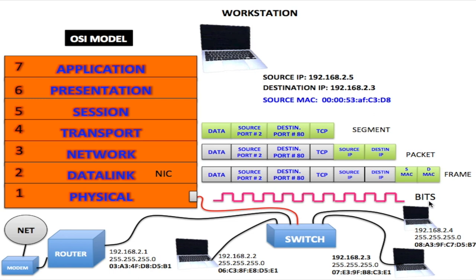Now this is a local area network connected to a switch. We have four computers all together. I'm using the OSI model here as an example to show you how data flows through the OSI model to the switch. I won't be getting deeply involved in how the OSI model works because I have a video on this already, and I'll put a link to that video in the description below.